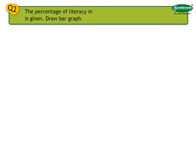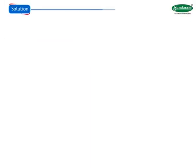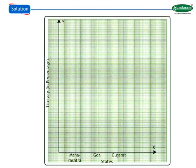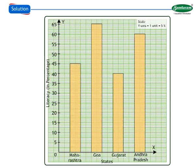Number 2: The percentage of literacy in some Indian states in the year 1981 is given. Draw a bar graph. Literacy rate in Maharashtra was 45, in Goa it was 65, in Gujarat it was 40, and in Andhra Pradesh it was 60. Solution: Draw both axes. Take states on X axis, literacy percentage on Y axis. Scale of Y axis is 1 unit equal to 5%. Mark from 0 to 65% leaving a gap of 1 cm. Draw columns — the height of each column corresponds to the literacy percentage of that state. Thus, we have drawn the bar graph representing percentage of literacy in some Indian states.